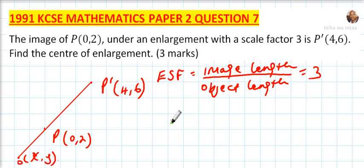So therefore if we take from the image point and say 4 minus x, that is the distance from the center of enlargement to the image, you divide by 0 minus x, then should be equals to 3.